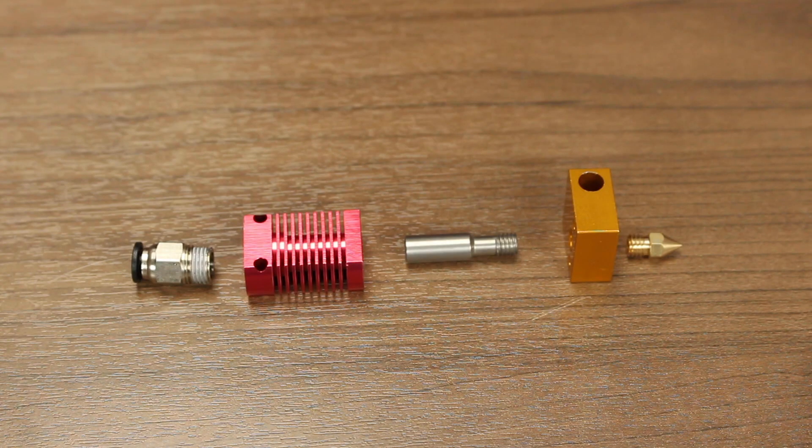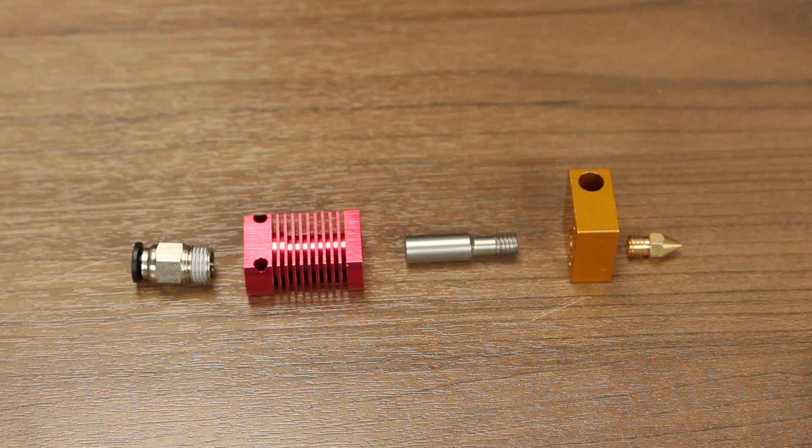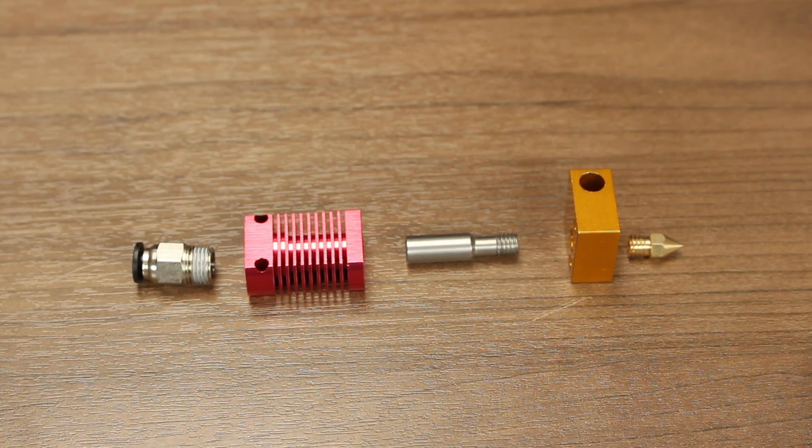Now that we have looked at E3D, let's take a look at Creality's standard hot end. It has the same basic parts as the E3D hot end. Pneumatic fitting, heat sink, heat break, nozzle, and heat block.